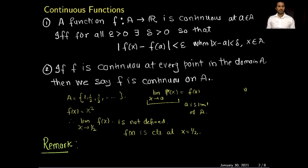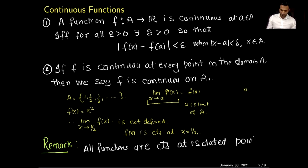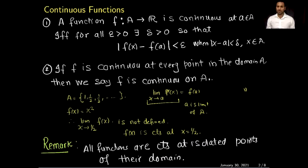Let me summarize this discussion in a remark. We can use the epsilon-delta definition of continuity to prove that all functions are continuous at isolated points of their domain. In other words, if a point is isolated and is part of the domain of the function, then the function must be continuous at that point.